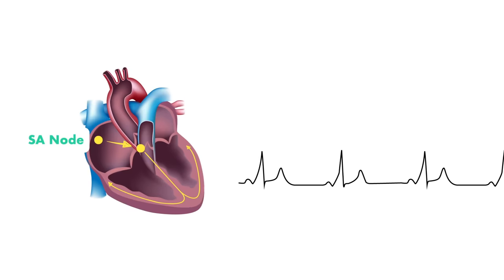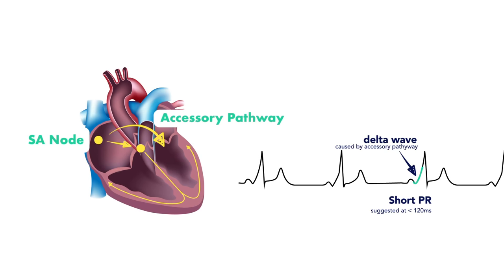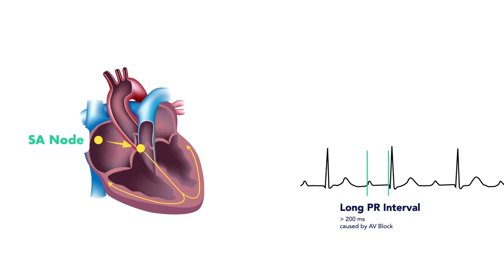Intervals that are way too short can represent abnormal accessory pathways, and intervals that are too long can represent AV blocks.